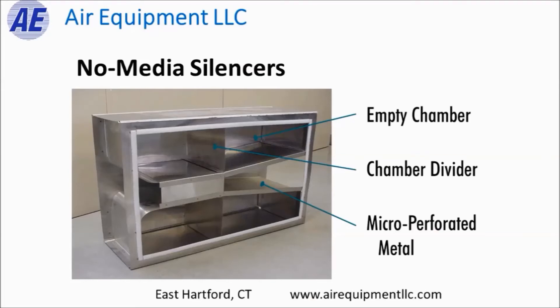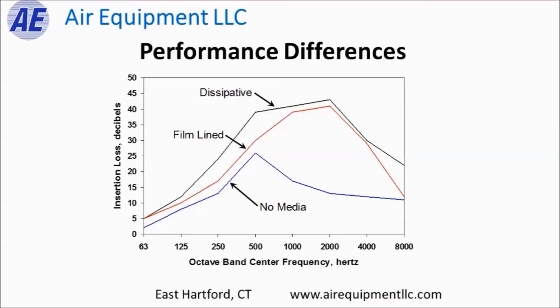The third type is the no media silencer, which has empty chambers. The perforated metal uses micro perforations — the theory is that sound energy enters one of the chambers, rattles around, and does not return to the supply air stream, attenuating some noise. A graph here illustrates the typical performance of all three different types of attenuators.